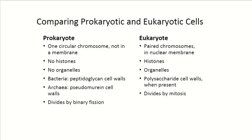Comparing the two: prokaryotes have one circular chromosome that is not enclosed in a membrane, where eukaryotes have pairs of chromosomes protected in a nuclear membrane. As for cell walls, prokaryotic bacteria have peptidoglycan cell walls, archaea have pseudomurein cell walls, and they always divide by binary fission. Eukaryotes, if they do have a cell wall, have a very simple one, and in the case of animal cells there is no cell wall at all. Eukaryotes produce more cells by mitosis.